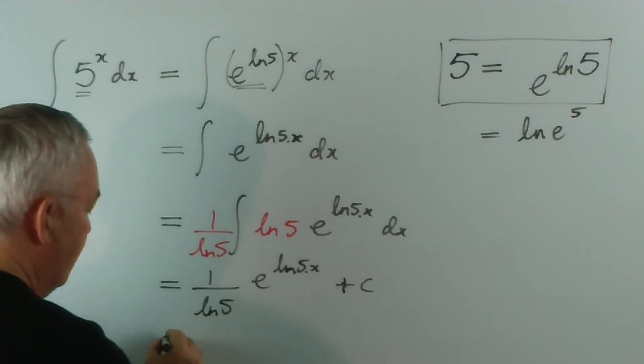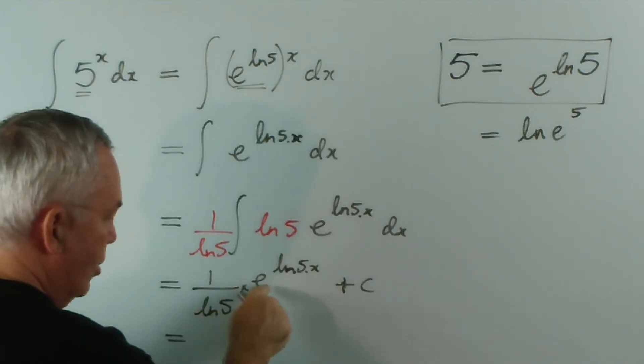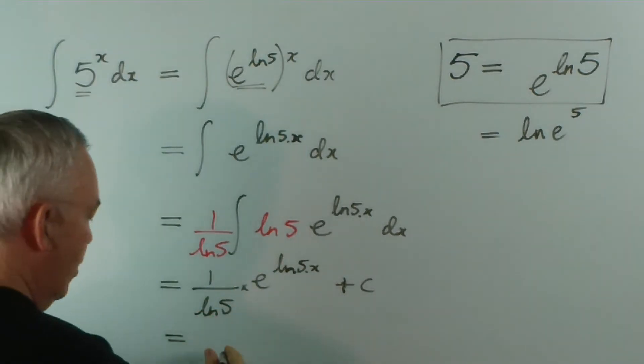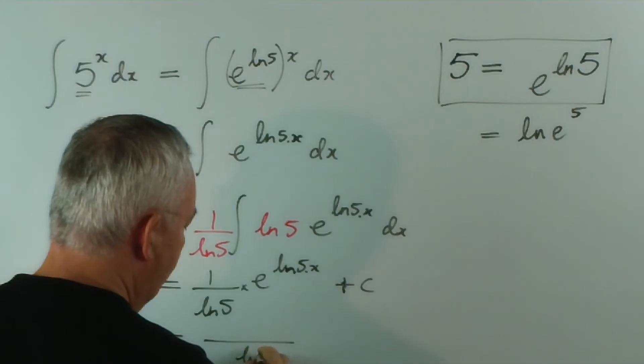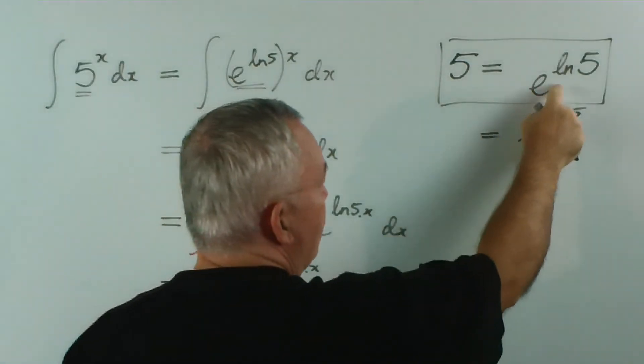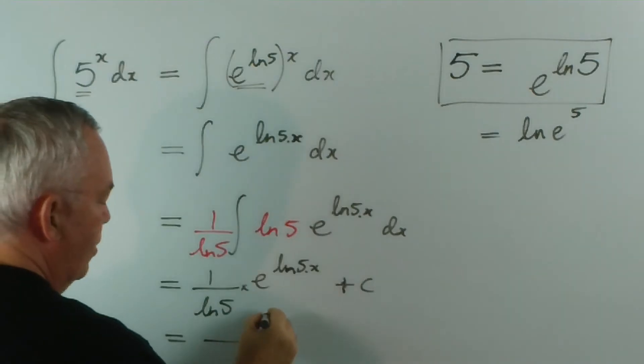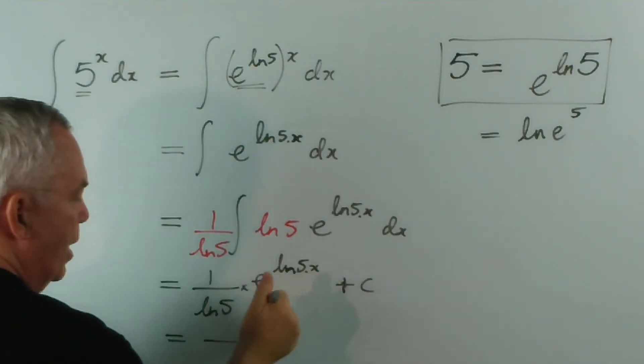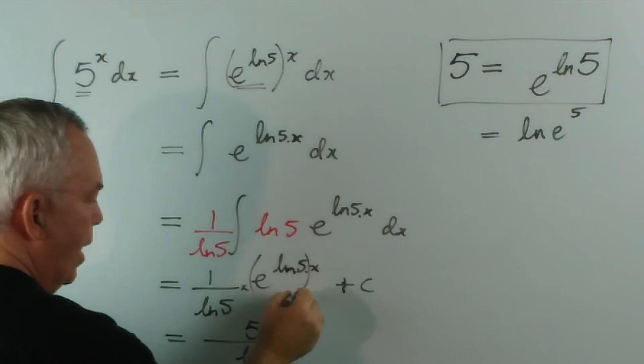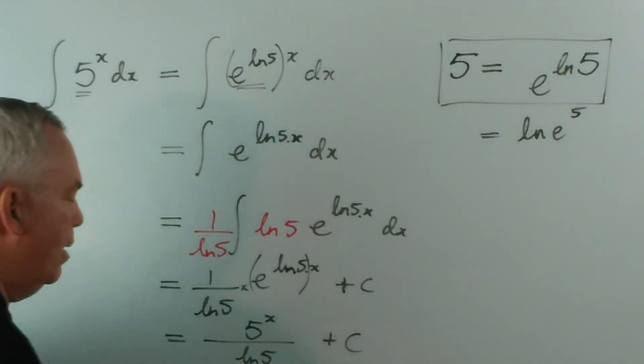Now of course, because this is a fraction multiplied by this, I can write 1 times the exponential over the log 5, so I put the log 5 on the bottom. And remember, exponential to the logarithm of 5 is worth 5. So it's just back to our 5 to the power of x. Remember, the x remains, we've just changed that back into a 5.